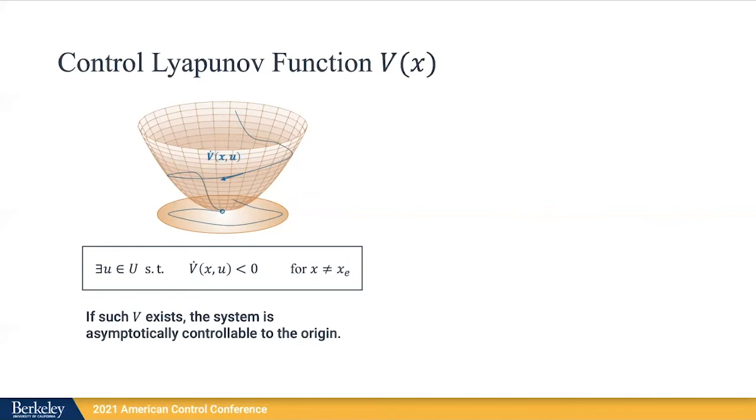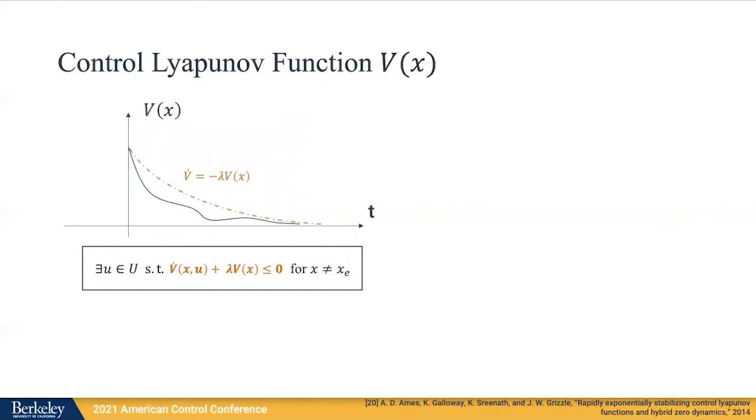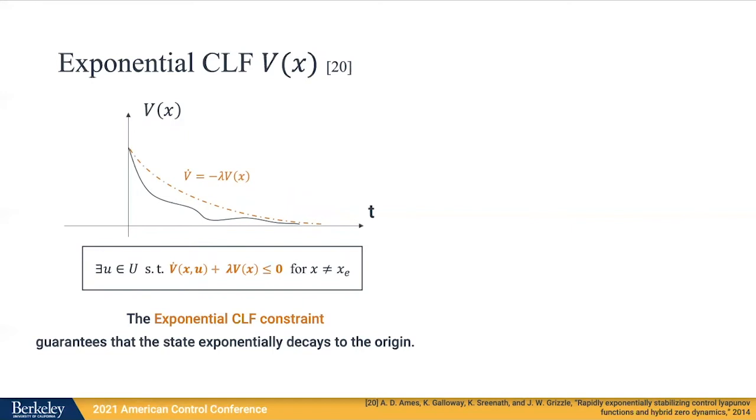We will actually consider a stronger notion of stabilizability by replacing the previous condition on V-dot with this one. We will call V that satisfies such property as exponential CLF and the condition on U as the exponential CLF constraint. Intuitively, if this new condition can be satisfied, we have a guarantee that we can always find the control input such that its evolution approaches zero better than the exponentially decaying curve. The main assumption of this paper is that V is a locally valid exponential CLF, both for the nominal model and the true plant. The main implication of our assumption is that the nominal model and the true plant share some similarity through the stabilizing property of the same function V.